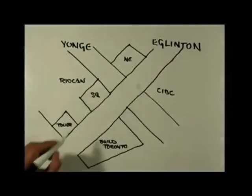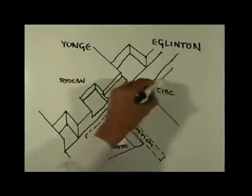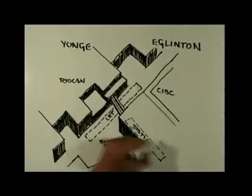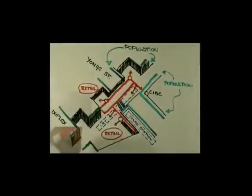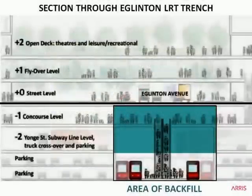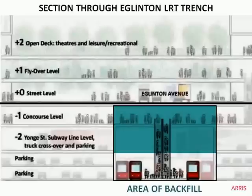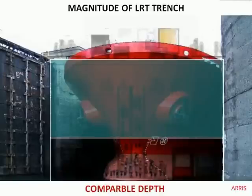Here we see how this volume is created — the LRT platform at the bottom, how the station is over top, and how there's a concourse involved. Here we see it in cross-section, with the street level in the middle of Eglinton and the various levels adjacent to this excavation. The area marked in blue is a section of the excavation that, once the LRT trackage is in the base of the trench, is intended to be backfilled.